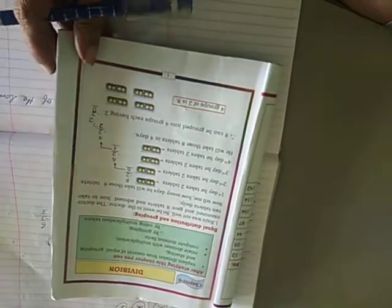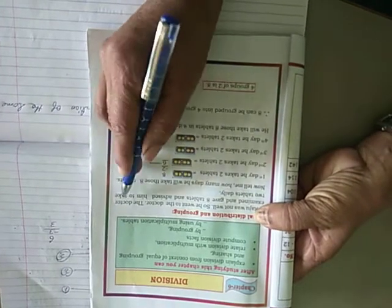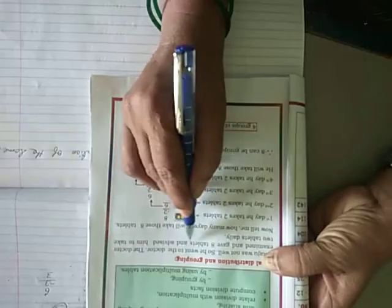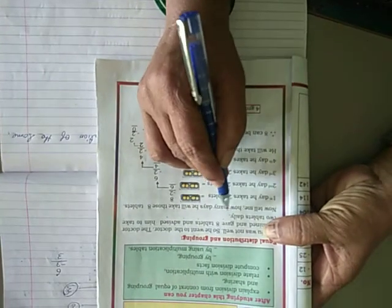Coming to page number part 2 in your textbook, page number 1. Division - Equal distributions and grouping. Raju was not well, so he went to the doctor. The doctor examined and gave 8 tablets and advised him to take 2 tablets daily.